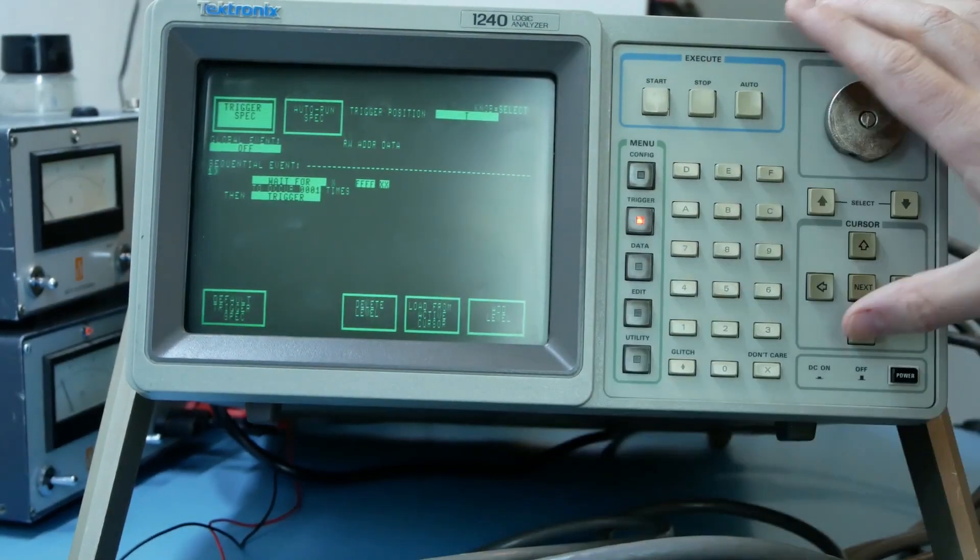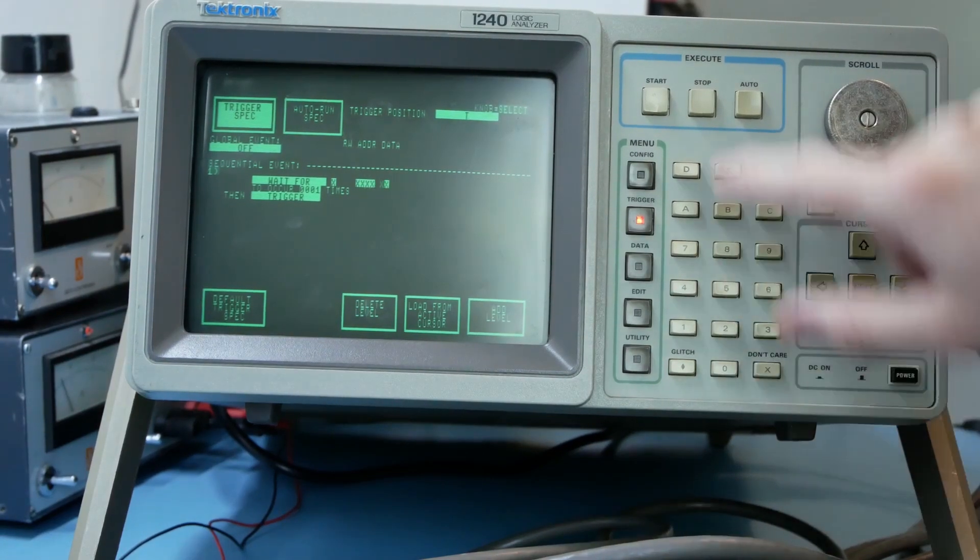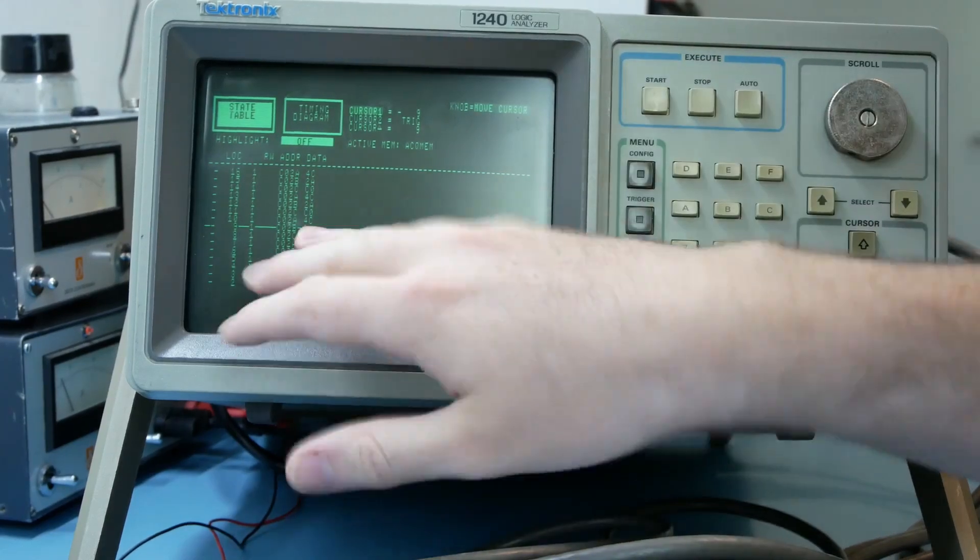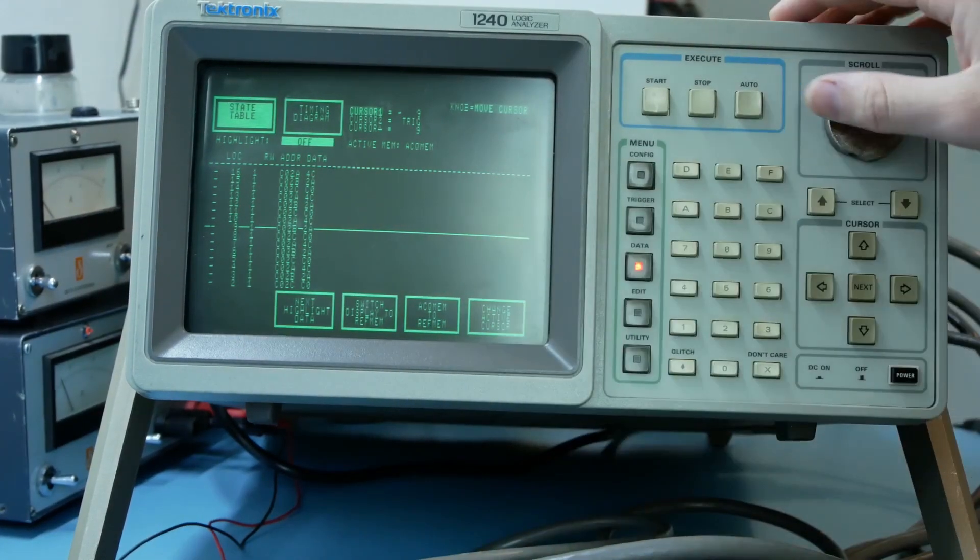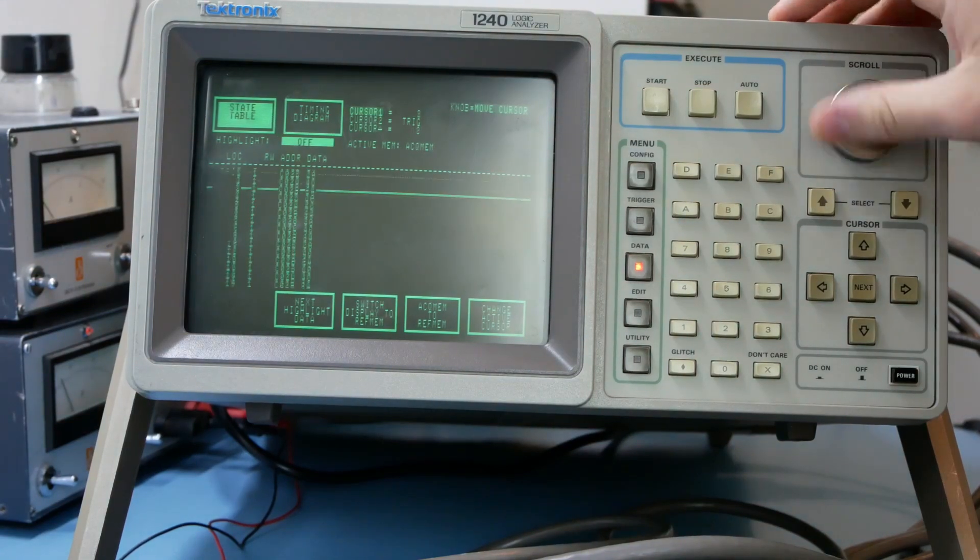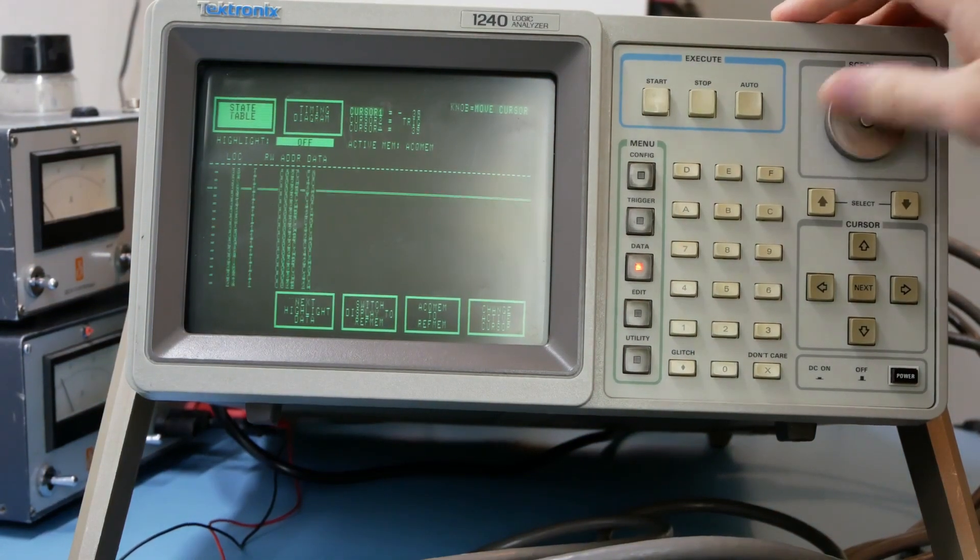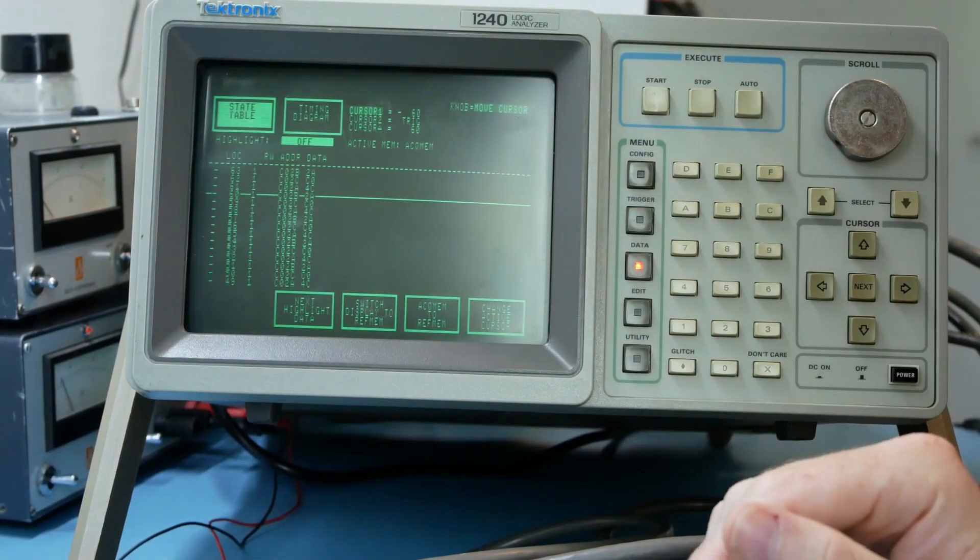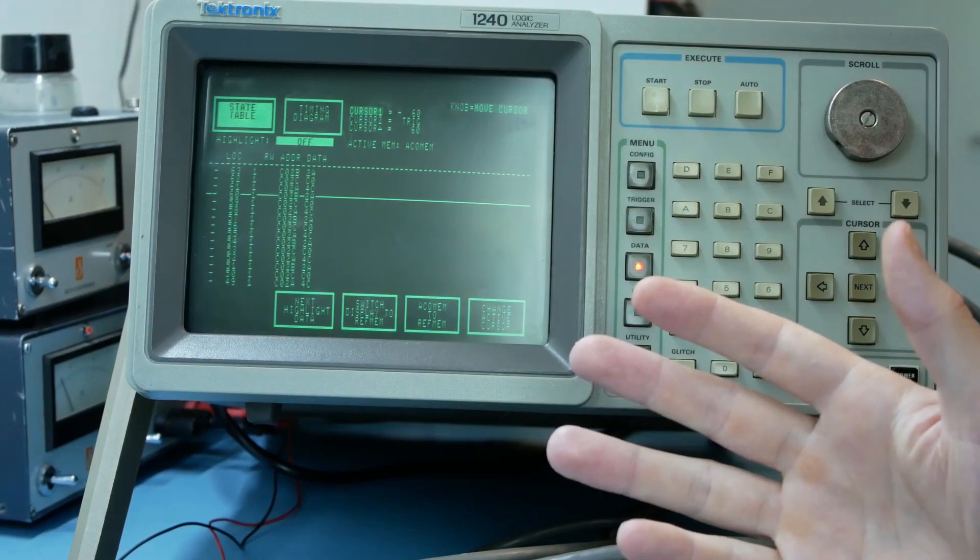Now let's set up the trigger with don't care for all groups and start again. And there we go! The address now looks correct. The read write pin is always high meaning that the CPU is always reading data. Which makes sense. The code for the blinky is just waiting in a while loop for an interrupt from a timer. So yeah that all looks correct. Perfect!